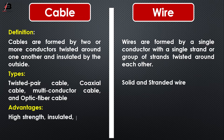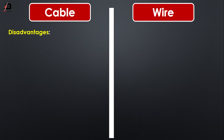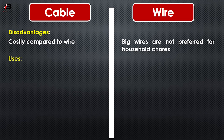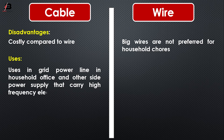Advantages of Cable: highest strand insulation, preferred for long distance use. Advantages of Wire: higher frequency and lower resistance compared to Cable. Disadvantages: Cable is costly compared to Wire, whereas large Wires are not preferred for household use. Usage: Cable is used in high power lines, household, office, and other power supply applications that carry high frequency electricity.